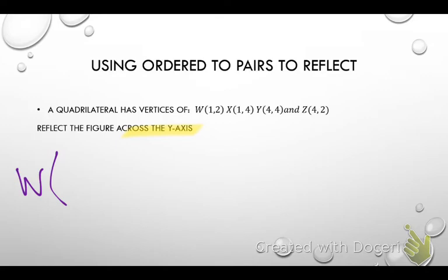So if I'm reflecting across the Y axis, what's my new point W going to be? Write it down on your papers. Caitlin, you think you know? Anybody think they know? Ethan? W is 1, negative 2. No. It is not. Anthony? Negative 1, 2. Negative 1, 2. Why did we do the opposite of X?